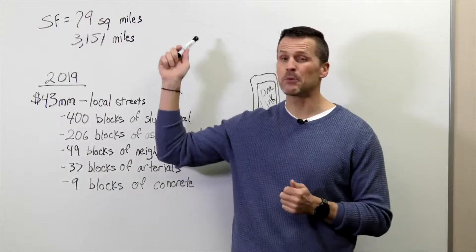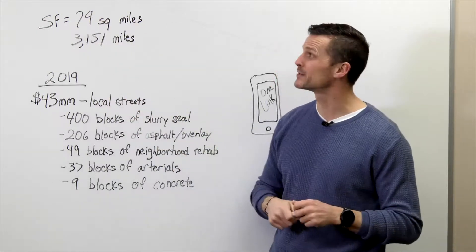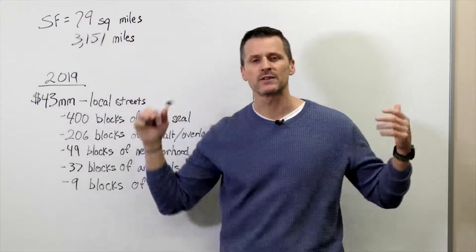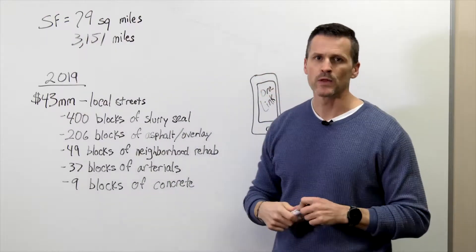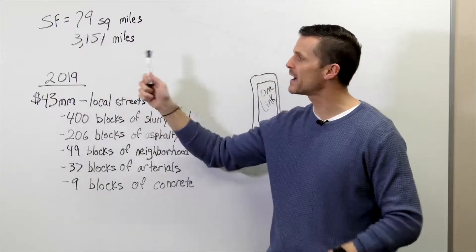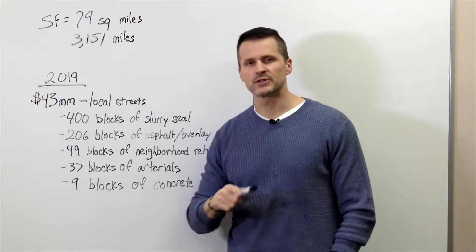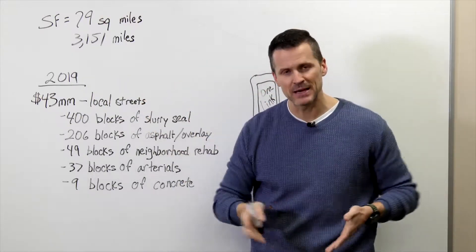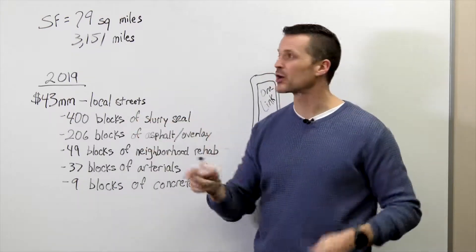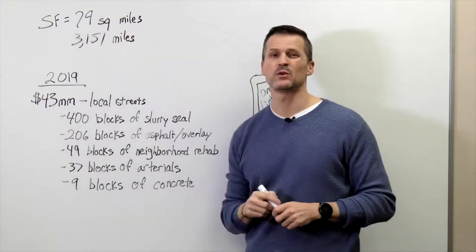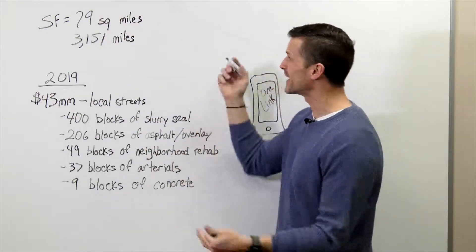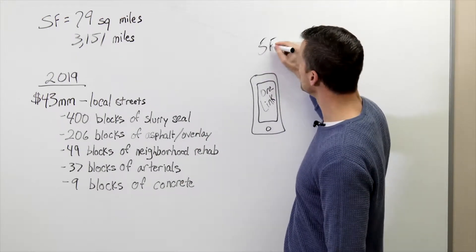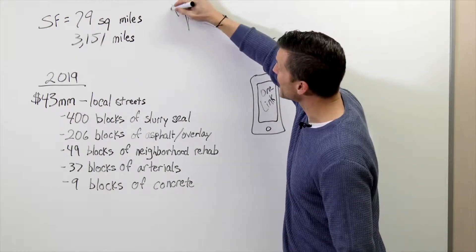Just to give you an idea of how big that infrastructure is in our road network, the city of Sioux Falls is roughly 79 square miles. Within that 79 square miles, we have 3,151 what we call lane miles, each lane being measured separately, including parking. That's 3,151 lane miles that we maintain every year. That's the equivalent of driving from Sioux Falls to Anchorage, Alaska.